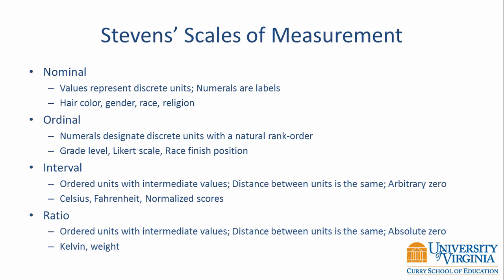Finally, we have ratio scales. Here we have ordered units with intermediate values and the distance between units is the same, just as it was with interval data. However, with the ratio scale, we have an absolute zero. Examples include the Kelvin scale and weight.